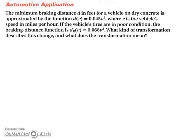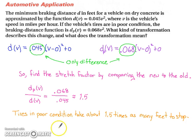Let's look at a real-world application. The minimum braking distance d in feet for a vehicle on dry concrete is approximated by d of v equals 0.045v squared, where v is the vehicle's speed in miles per hour. If the vehicle's tires are in poor condition, the braking distance function is dp of v equals 0.068v squared. The only difference between the two is the a value. By dividing the new coefficient by the old, we see that tires in poor condition take about 1.5 times as many feet to stop — this is a vertical stretch transformation. And that ends our lesson.